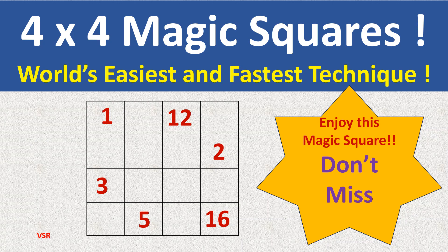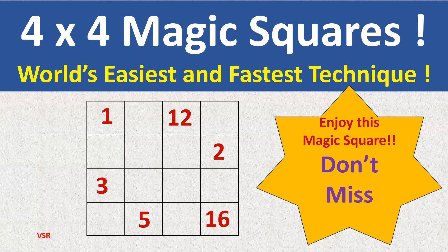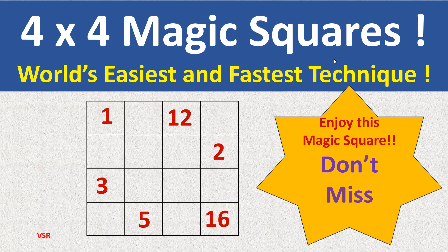Now, let us create the magic square of 4 by 4. I use a Vedic mathematics technique here, and this is going to be world's easiest and fastest technique. It really works like magic.